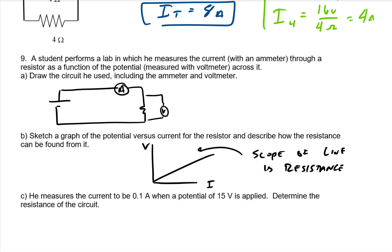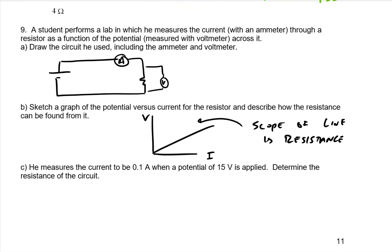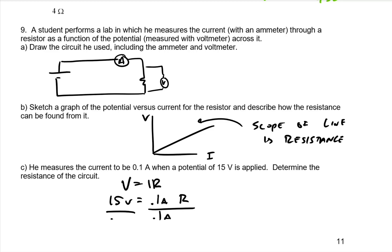We measure the current to be 0.1 amp when a potential of 15 volts is applied. Determine the resistance using V = IR: 15 volts equals 0.1 amps times R. Dividing both sides by 0.1 amps gives a resistance of 150 ohms.